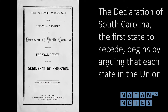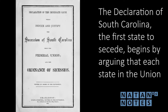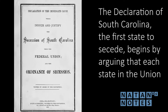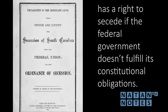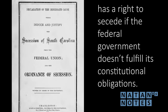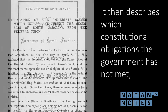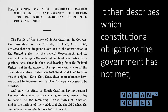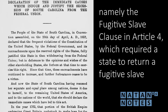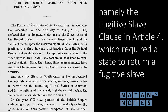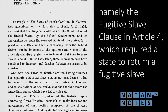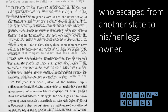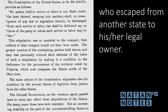The Declaration of South Carolina, the first state to secede, begins by arguing that each state in the Union has a right to secede if the federal government doesn't fulfill its constitutional obligations. It then describes which constitutional obligations the government has not met, namely the Fugitive Slave Clause in Article 4, which required a state to return a fugitive slave who escaped from another state to his or her legal owner.